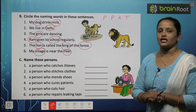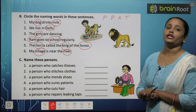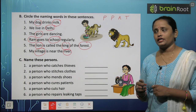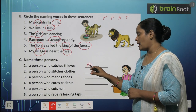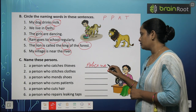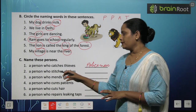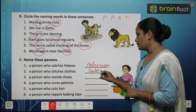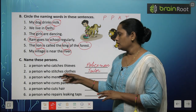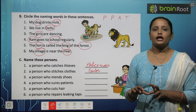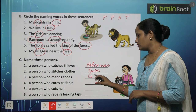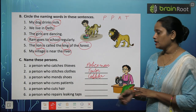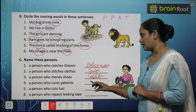Now let's move on to Exercise C — name these persons. A person who catches thieves — yes, policeman. Policeman ek person hai aur ek naming word bhi. A person who stitches clothes — tailor. Aapko kapde silwane hote hain toh tailor ke paas jaate hain. A person who makes shoes — cobbler. A person who cures patients — doctor.